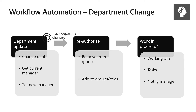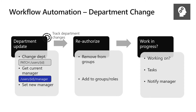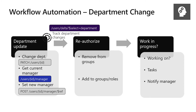Now imagine that same person also needed to do something similar any time a user changed departments. Microsoft Graph can help here too. First, Microsoft Graph can help you update the user's department by patching the user object. Then you can get the user's current manager, store that, and set the new manager. In the background, a dedicated app can monitor for department changes using Delta Query, which is our change tracking API, and then take a set of automated steps when that happens.